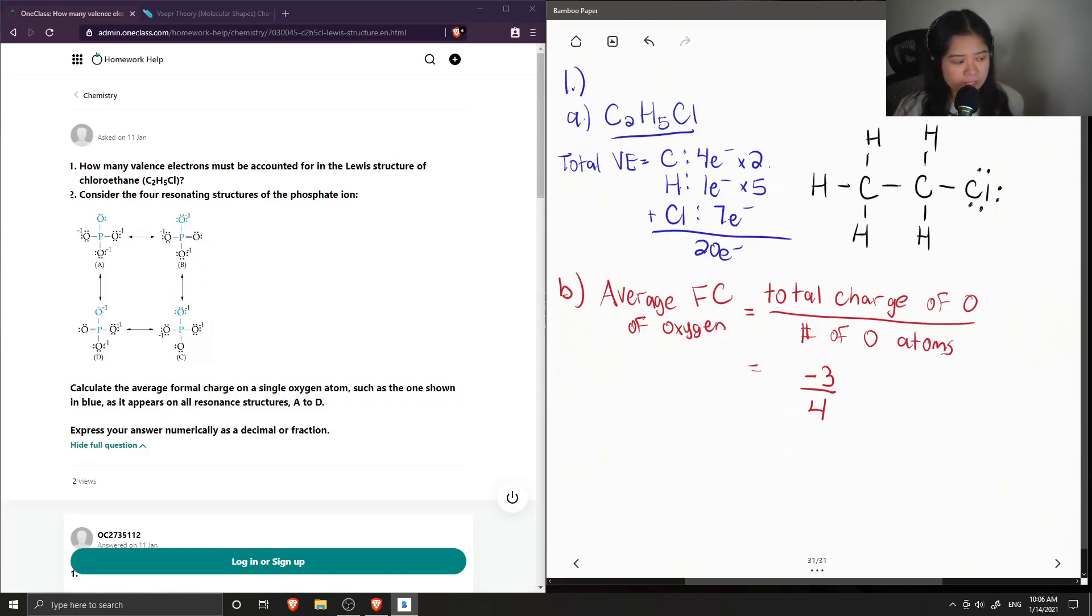So the average formal charge of oxygen on our phosphate ions is negative three over four. So this is as a fraction, or we can write it as a decimal, negative 0.75.